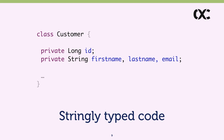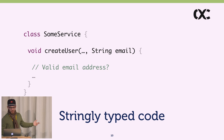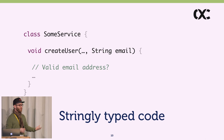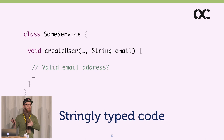What's wrong with stringly-typed code? The problem is that if you have code that takes an email — a domain concept — implemented as a plain string, then the called code can never be sure whether the string it was given is actually a valid email address.